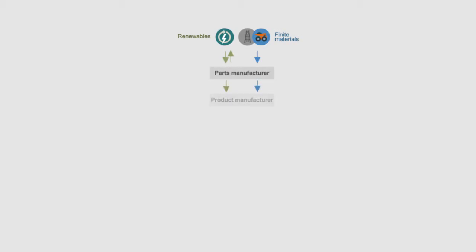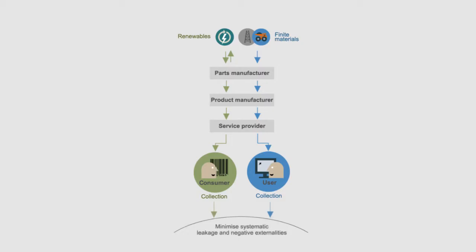A circular economy keeps products, materials and components in use at their highest value at all times, ultimately seeking to decouple economic growth and development. It does so by distinguishing between two types of cycle.